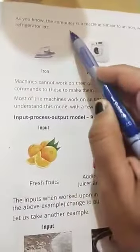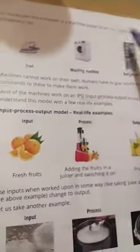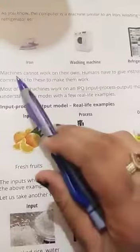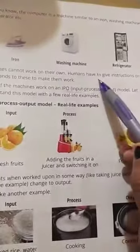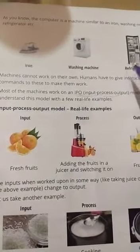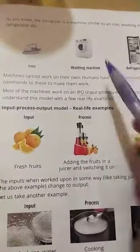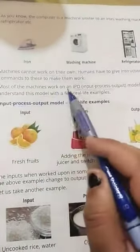So let's start, coming to next page that is page number 9. As you know, the computer is a machine — बच्चो आप सब जानते हो कि computer एक machine है — similar to an iron, washing machine, refrigerator, etc. Machines cannot work on their own — machines बच्चो वो अपने आप काम नहीं कर सकती। Humans have to give instructions or commands to these machines to make them work — human beings इनसान जो है बच्चो, वो instructions देते हैं या commands देते हैं, तब ही ये machines काम करती हैं।